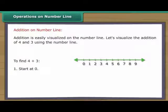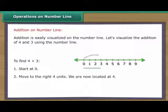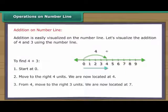To find 4 plus 3: Start at 0. Move to the right 4 units. We are now located at 4. From 4, move to the right 3 units. We are now located at 7. Thus, 4 plus 3 is equal to 7.